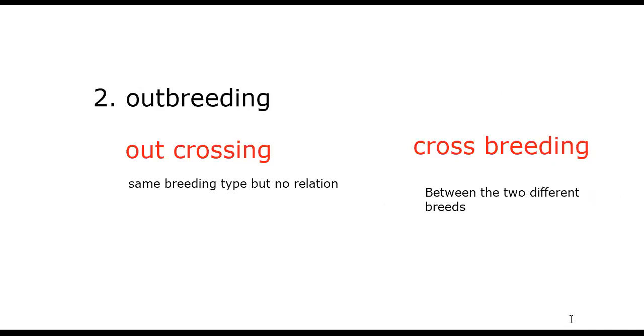Outcrossing involves the same breeding type but no relation between the animals. Crossbreeding is between two different breeds.